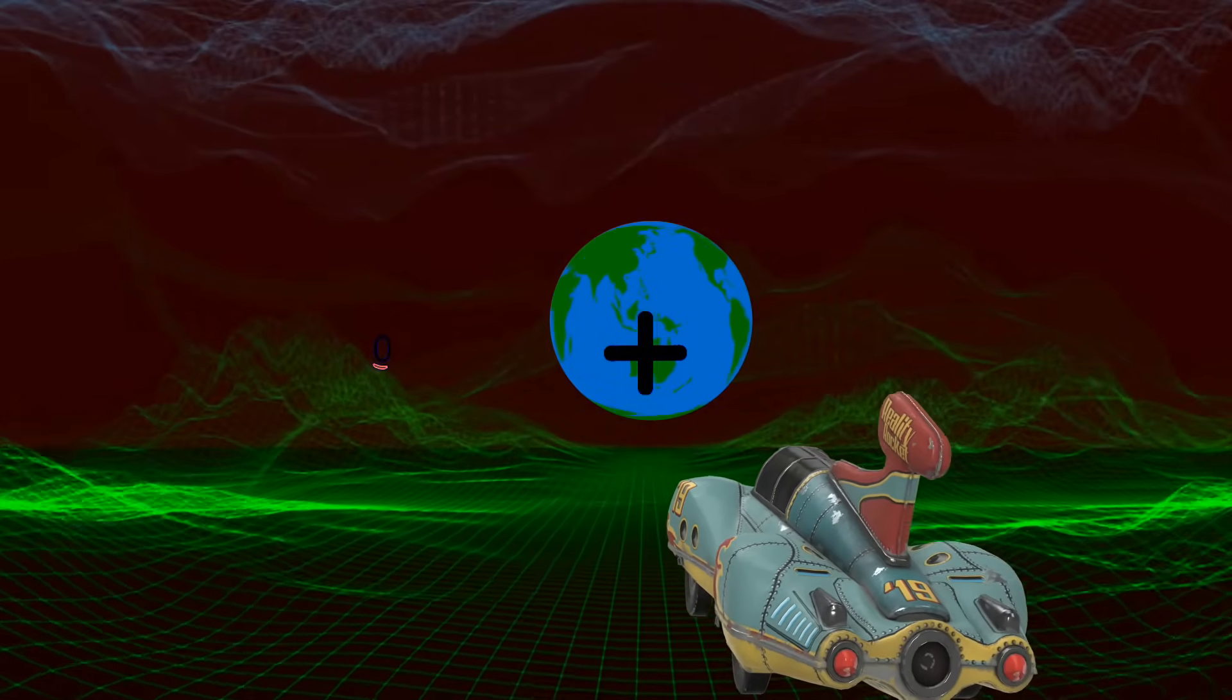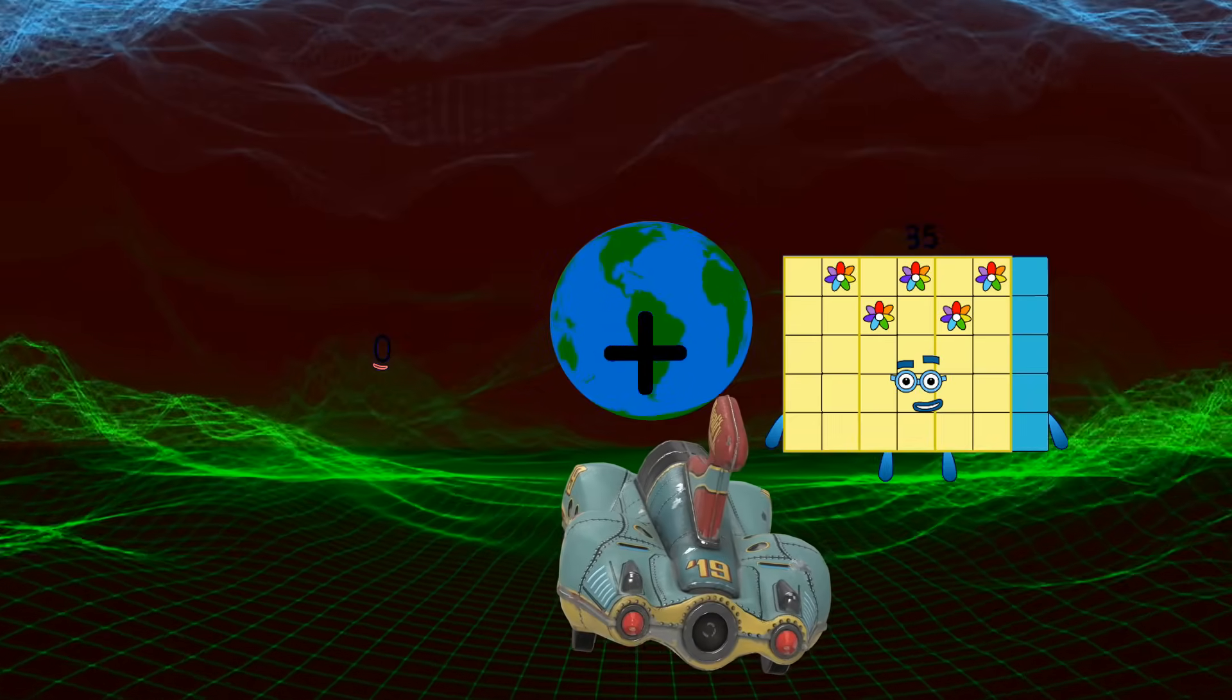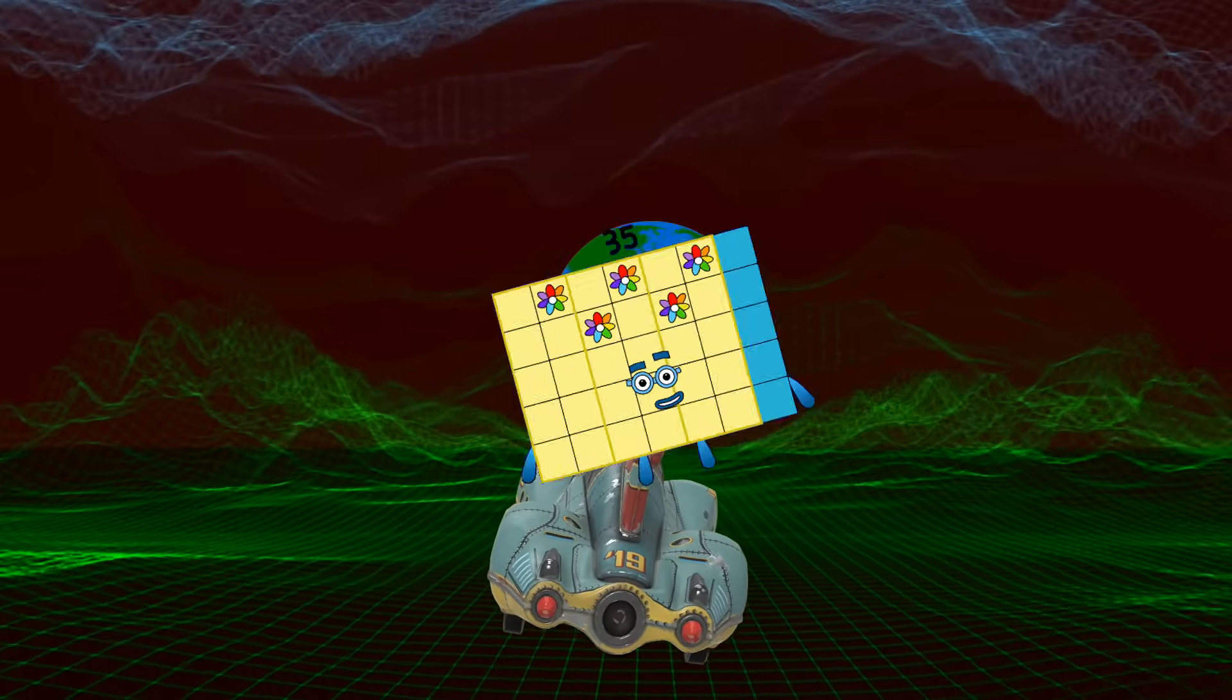Zero plus thirty-five equals thirty-five.